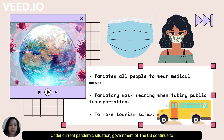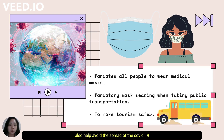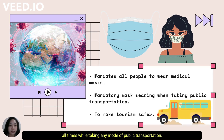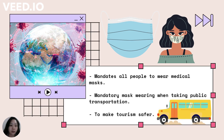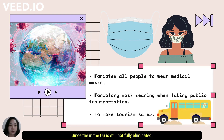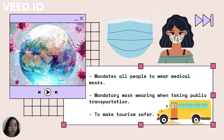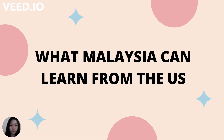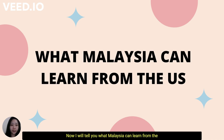Moreover, under the current pandemic situation, the government of the U.S. continues to work toward creating a responsible tourism approach that would also help avoid the spread of COVID-19, giving inbound and outbound travelers assurance when they travel to the U.S. Regardless of vaccination status, U.S. federal law mandates all people to wear medical masks at all times while taking any mode of public transportation, since the COVID-19 pandemic in the U.S. is still not fully eliminated. It is the traveler's responsibility to ensure compliance with this policy at all times while traveling.